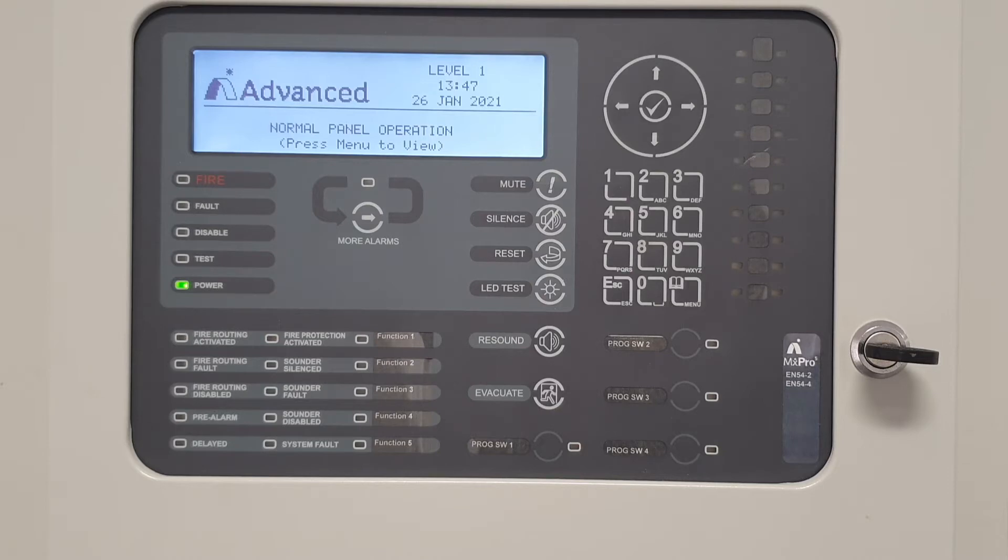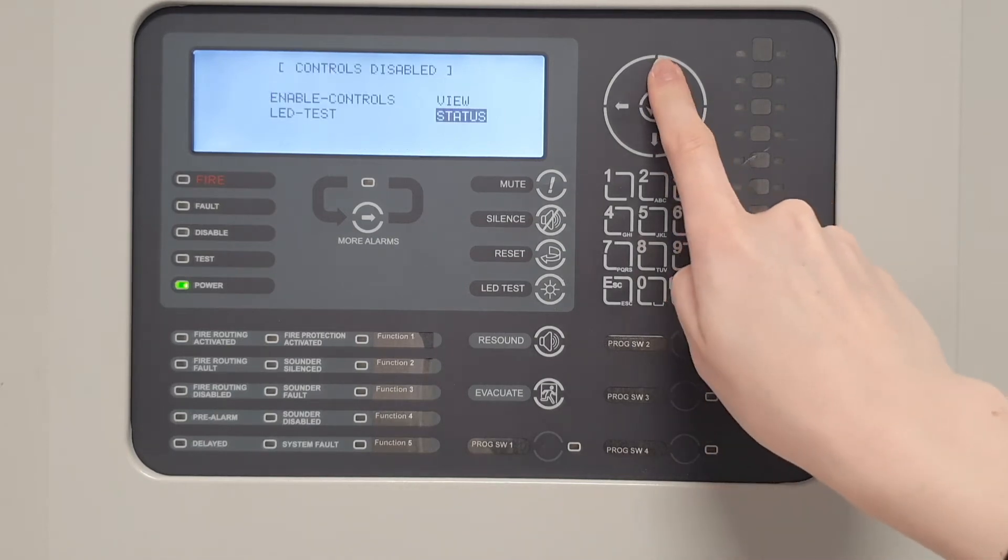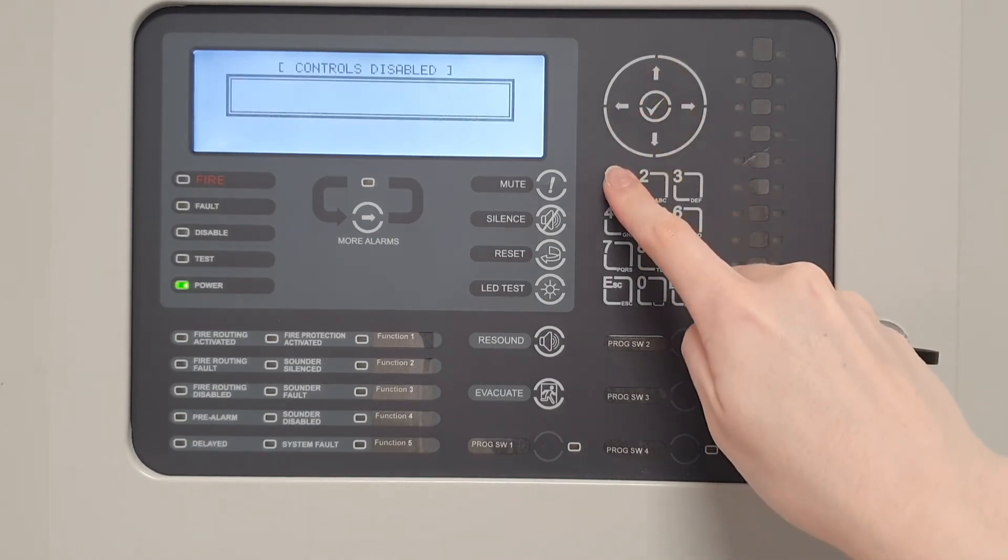Once the zone or device has been disabled, the disabled LED will show on the panel display. Devices cannot be disabled when the panel is in Access Level 1, and therefore the password must be entered to get into Access Level 2. By default, this code will either be 10,000 or 10,001.